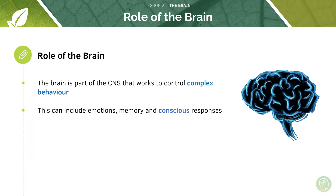Complex behaviour can include emotions, memory and conscious responses — the brain is primarily responsible for making these conscious responses. It's extremely complex, so different parts of the cortex of the brain are specialised for different functions. Remember that reflexes are unconscious responses which don't involve the brain, so the brain is primarily responsible for controlling complex conscious behaviour.